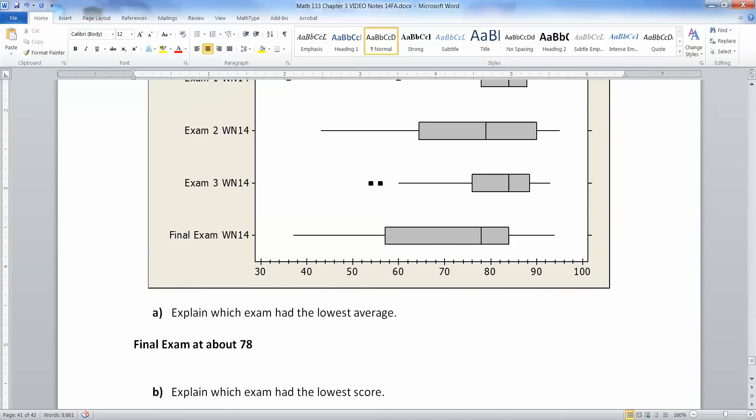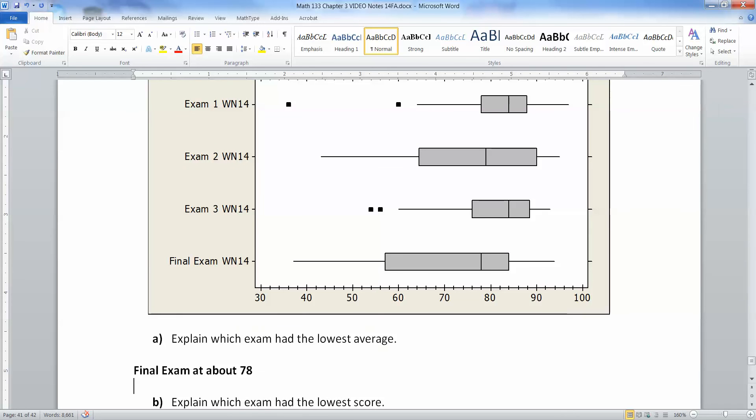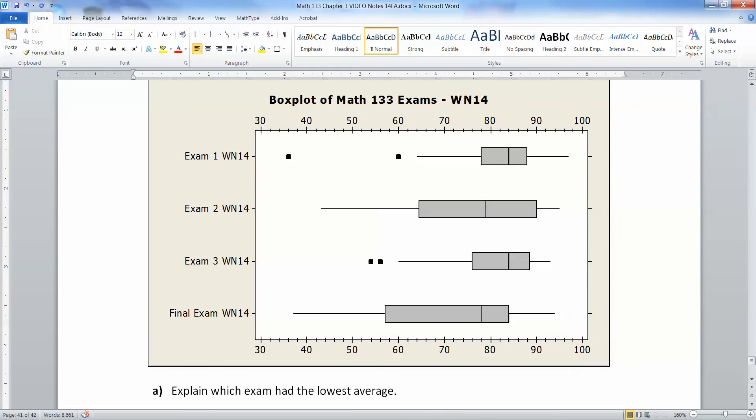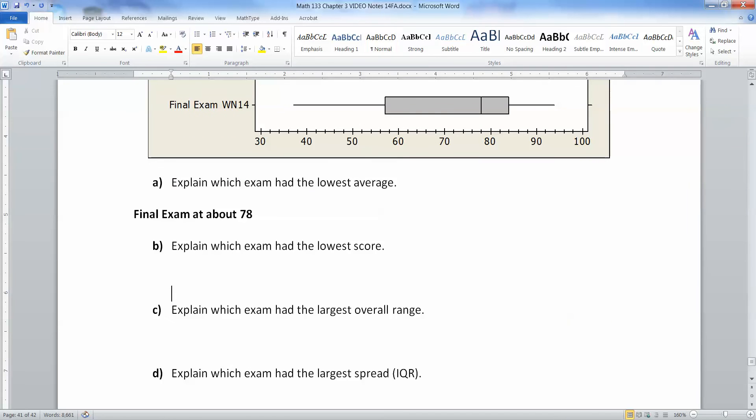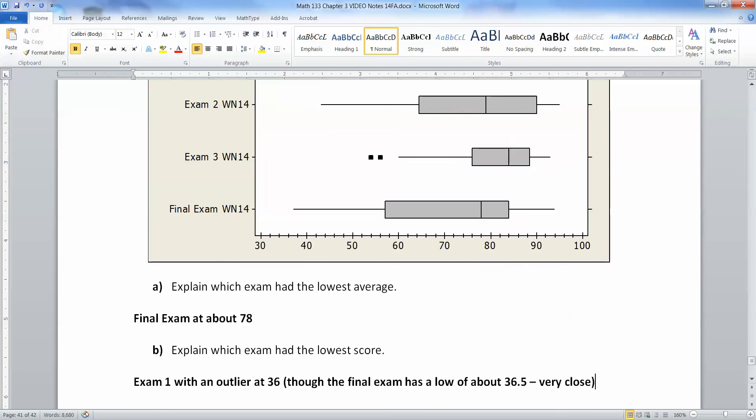Now which exam had the lowest score, period? Which exam had somebody doing the absolute lowest on it? Well, that would be exam one. It's a little close call because the whisker over here on final is pretty close to that. But the whisker looks like it goes to about 36 or so, just a little bit above it, like 36 and a half. And then this guy right here, this exam one, that's 36. So that would be exam one with a score of 36. So the final exam has a low of about 36.5. So very close. But the exam one wins. It's a little bit further left.